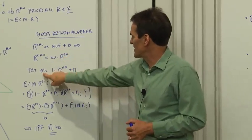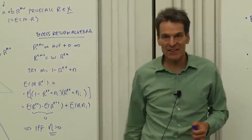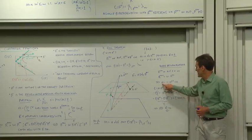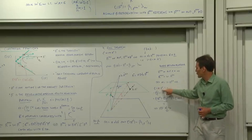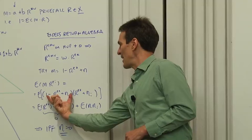Let's try a discount factor that is linear in RE star and I'll try some eta there and see what happens. So what I have to do, I just have to take E of M times RE. Let's try to price an excess return with that discount factor. What happens? There's my M.